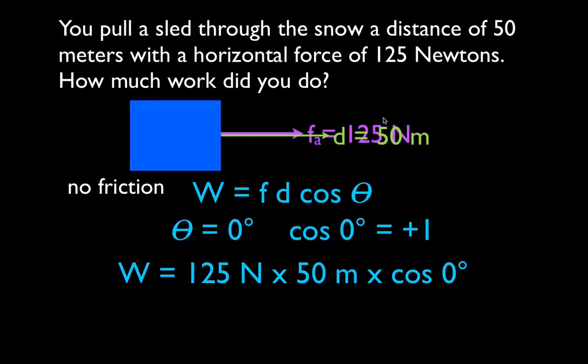Now, just plug everything in. One hundred twenty-five newtons, fifty meters, cosine of zero degrees. Multiply those through. Remember the cosine of zero degrees is one.